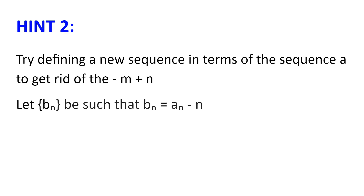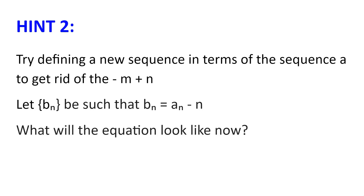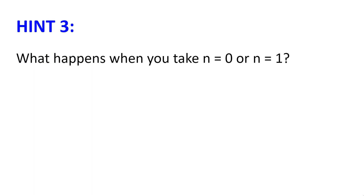Let the new sequence be b such that b(n) is equal to a(n) minus n. What will the equation look like now? And what happens when you take n equals 0 or n equals 1 with our new equation?